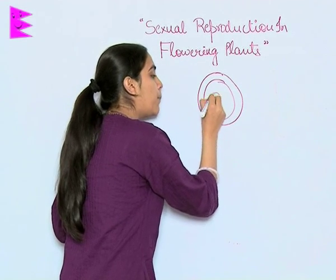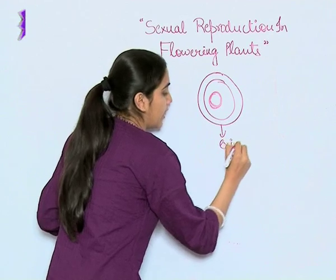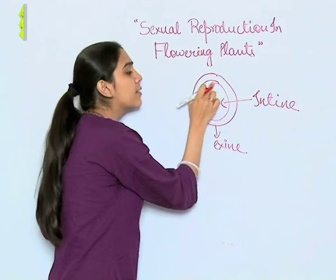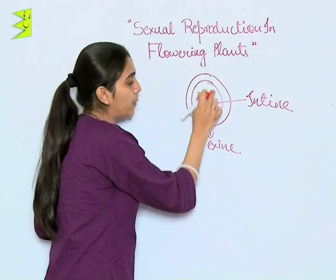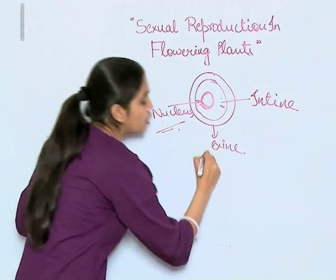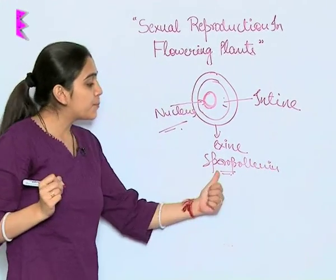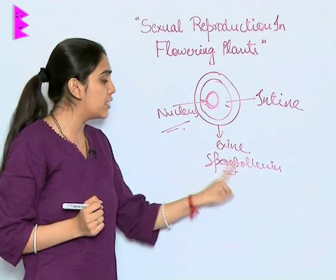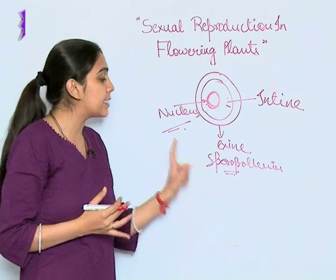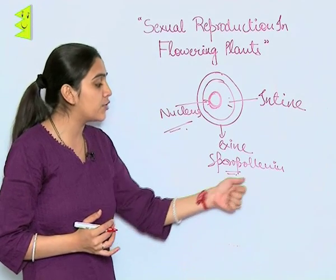This is how a pollen grain looks. It has two layers: the outermost layer is the exine and the inner layer is the intine. It has a thick and dense cytoplasm with one nucleus. The exine consists of sporopollenin, which prevents pollen grains from degradation. Sporopollenin is so strong that many enzymes and alkali acids are inactive upon it, and no enzyme or chemical action has been found effective against it.